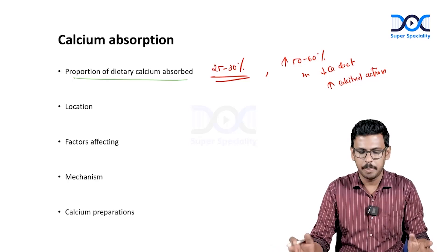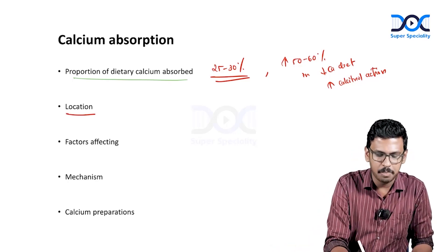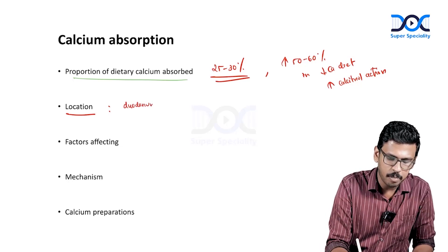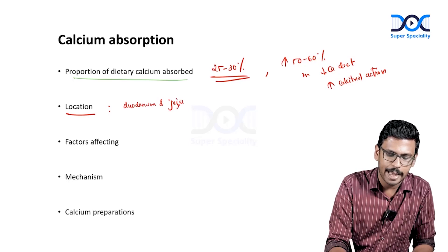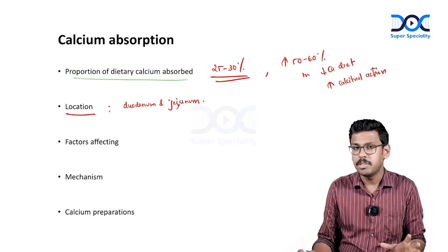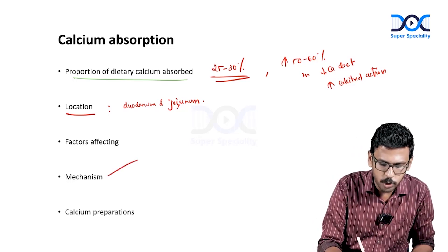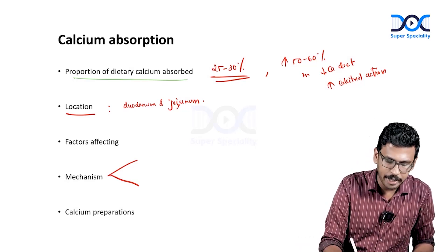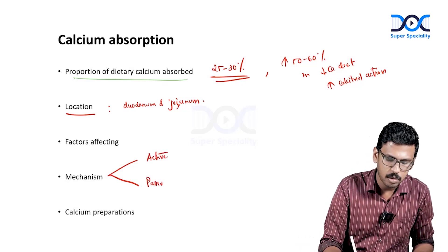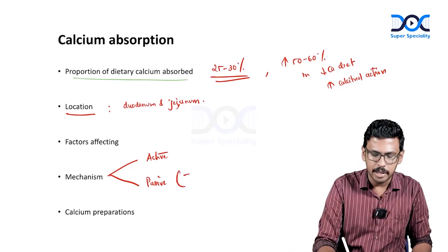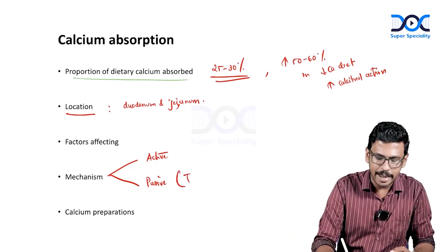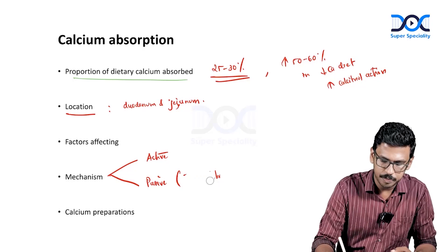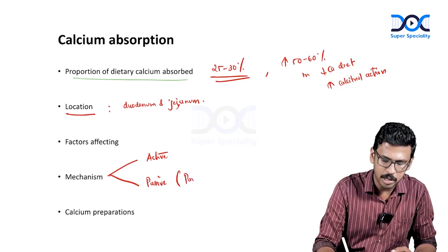Calcium is absorbed from the duodenum and jejunum — the same site for phosphorus absorption. There are two methods of calcium absorption through the gut wall: active (energy-dependent, transporter-mediated) and passive. Passive means calcium leaks from the lumen through the paracellular route — through gaps between two adjacent enterocytes — contributing only 5–10% of overall calcium absorption.